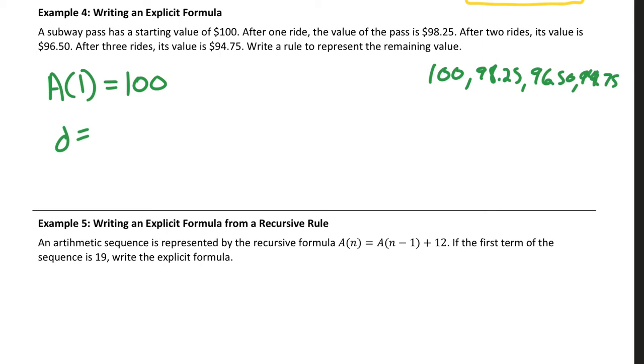So if I think about it, to find that common difference, I'm just going to do this. I'm going to do $98.25 minus $100. And it's really negative $1.75. So that means each ride costs $1.75. So my common difference in this case should be negative, because my common difference is decreasing the next term. It's decreasing the last term to get the next term. So I really want to emphasize how important this is to be able to write these explicit formulas.